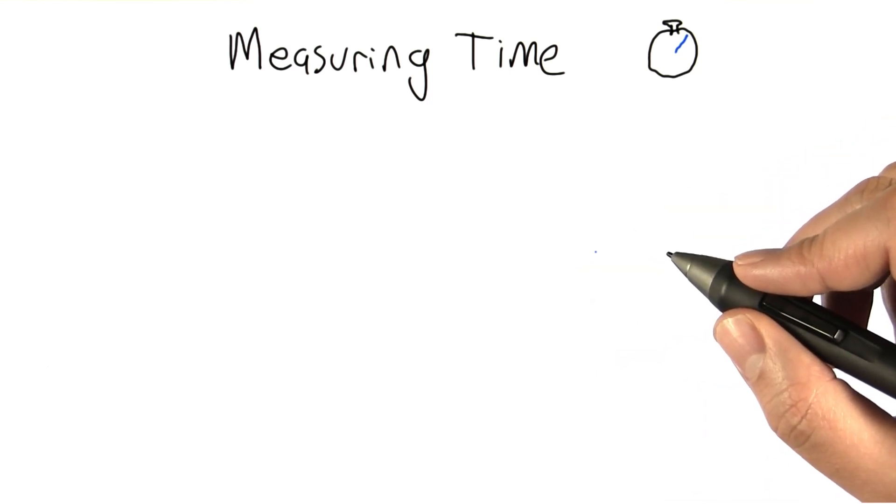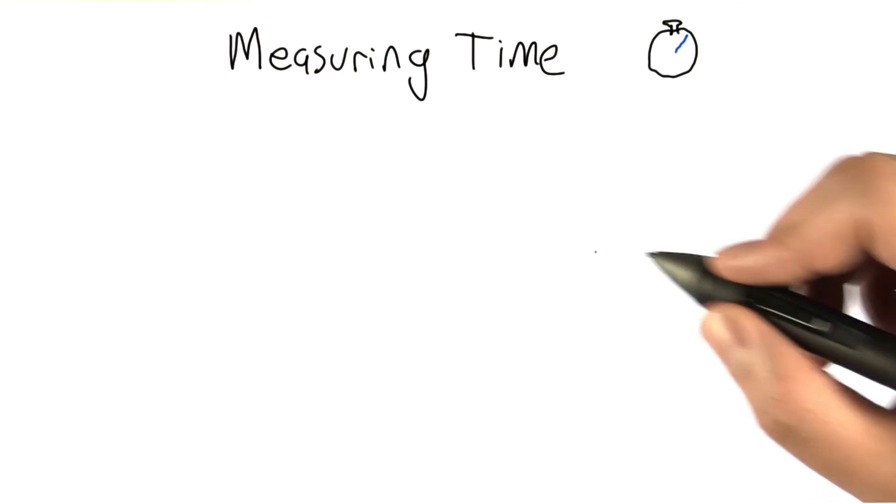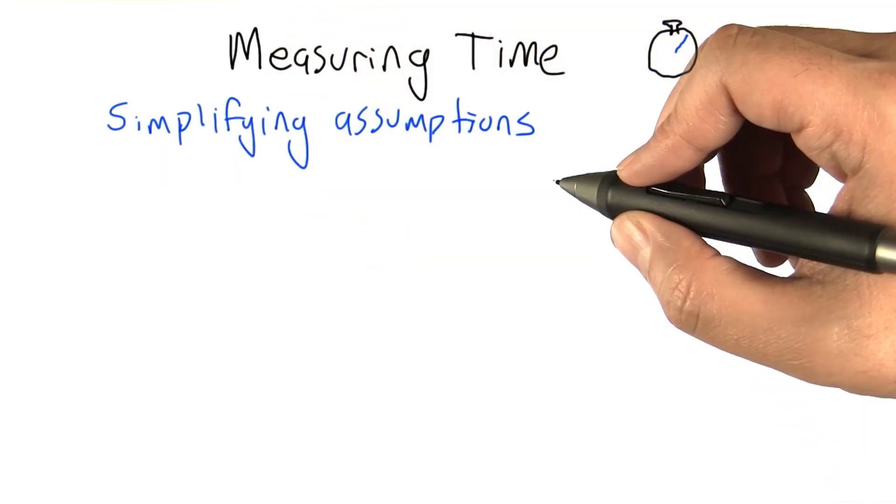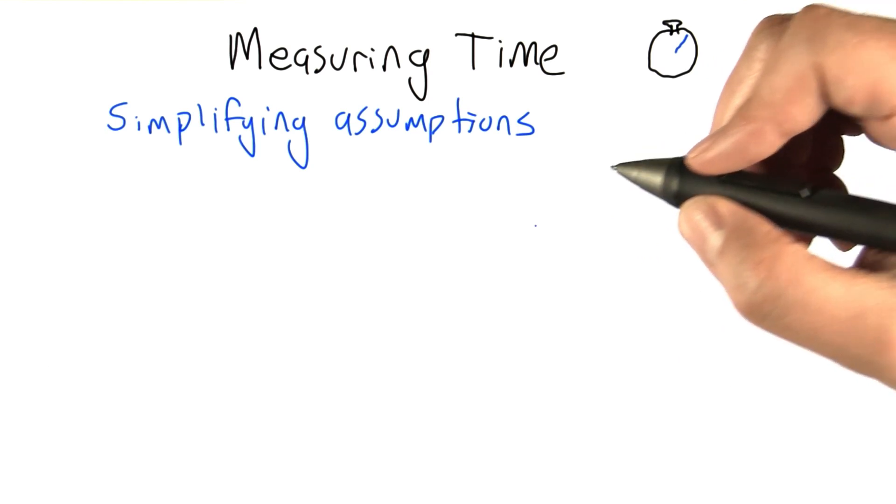To do that is very difficult. To get the exact timing information without actually running it is something that we probably can't do. But we can make a series of simplifying assumptions. These simplifying assumptions will allow us to do an analysis that is more tractable.